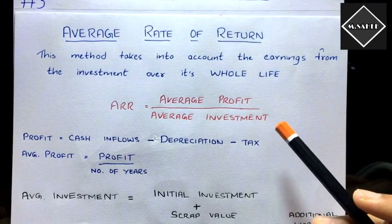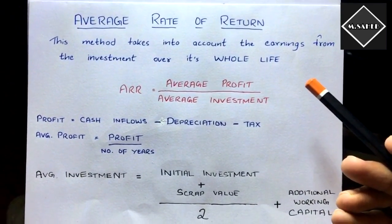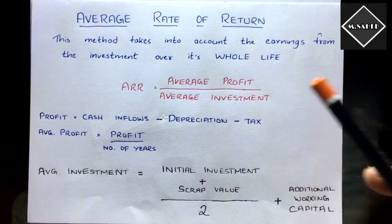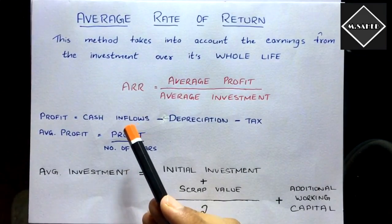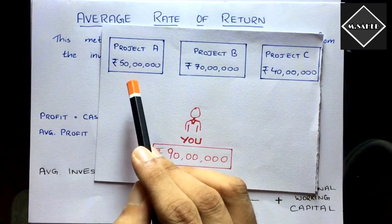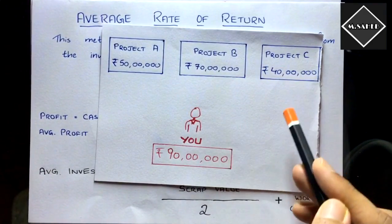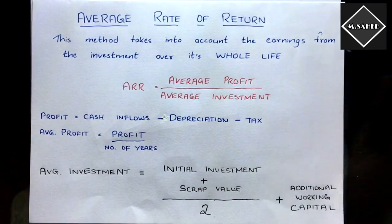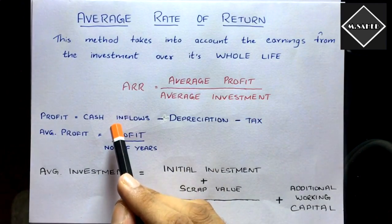In the question, average profit and average investment won't simply be given — you have to calculate them. Cash inflows will be given; for example, estimates might show the project fetches 10 lakh in year one, 15 lakh in year two, 20 lakh in year three, and so on. Based on those estimates we evaluate the project, since the future is uncertain.